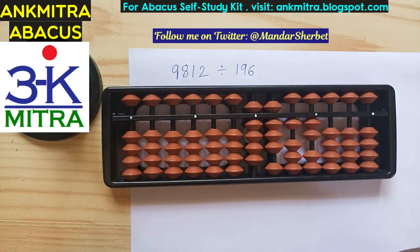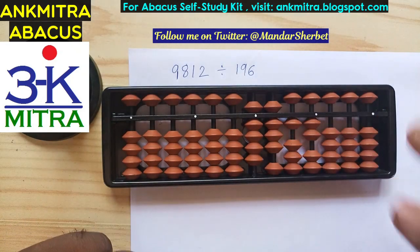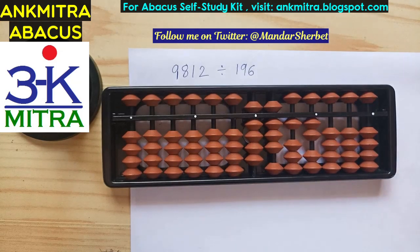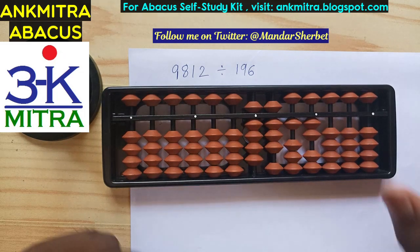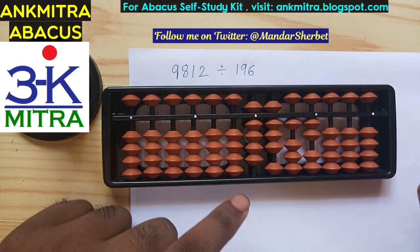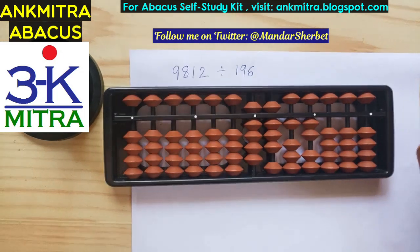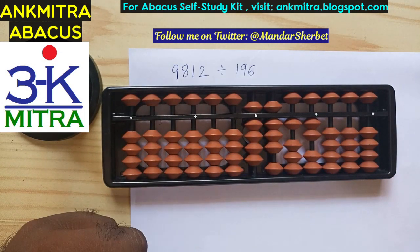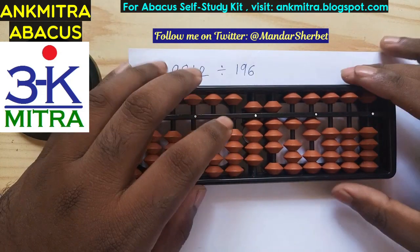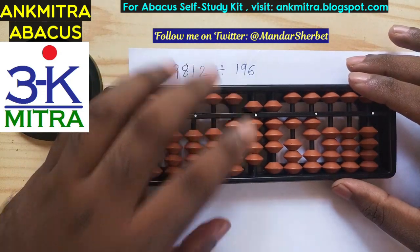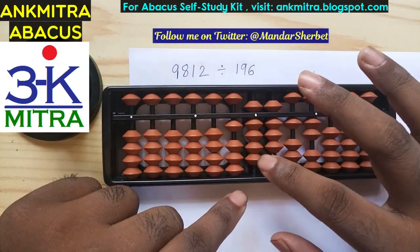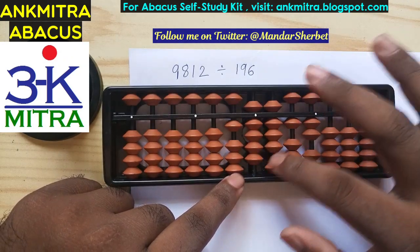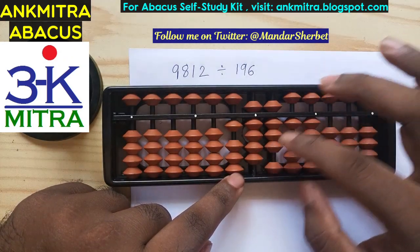Now let's start. We have the divisor as 196. Let's assume that we don't know the table of 196 or any multiple of 196, and we are supposed to do it directly. It's easier to start immediately without worrying about the multiples of 196. I'll take one on the answer set here on the tens place and then subtract 196 from 981.